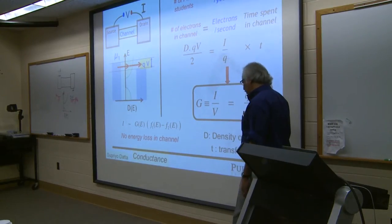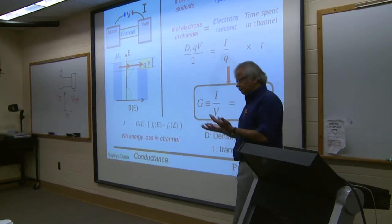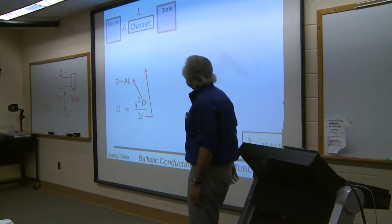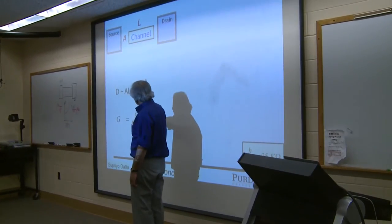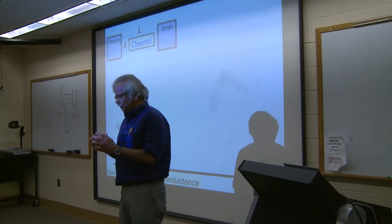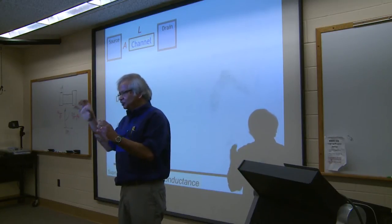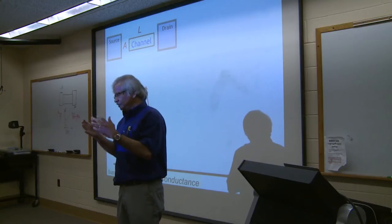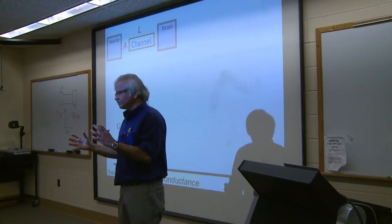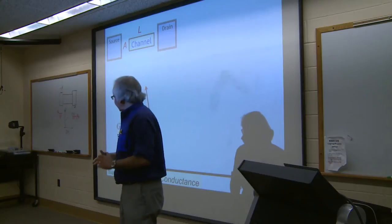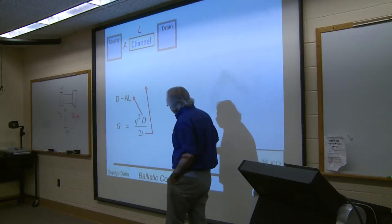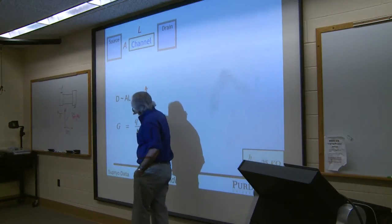The density of states for large conductors is proportional to volume — twice as big means twice as many states. Conductance cannot be proportional to volume; it must obey Ohm's law. For a ballistic conductor, the transit time is simply length divided by velocity, so length cancels and the conductance is proportional to area — independent of length. Experiments on short conductors confirm this: double the length, same conductance.